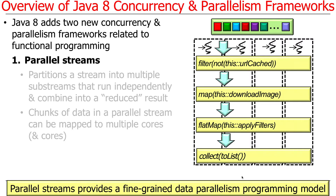The way to think about a parallel stream is as a fine-grained data parallelism programming model. Fine-grained means you can have lots of cores mapped to the data elements in the stream, and they can all run in parallel after the stream has been split.